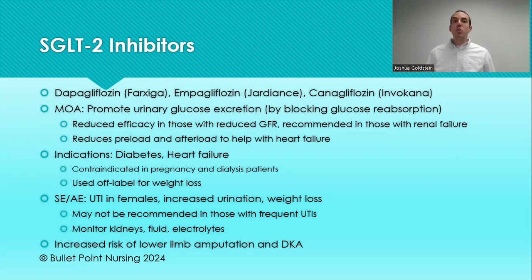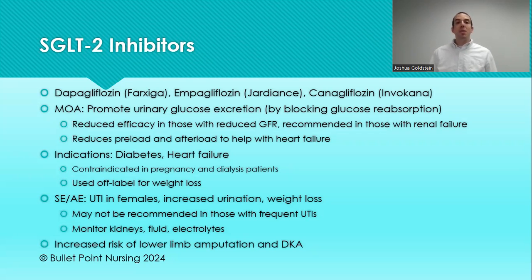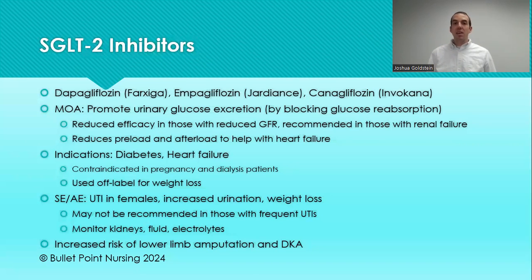SGLT2 inhibitors are also in the actual guidelines for treatment of heart failure — they are one of the four drug classes given for heart failure alongside beta blockers and ARBs. When prescribing for heart failure, educate the patient that the mechanism differs from its use in diabetes. These are contraindicated in pregnancy and in dialysis patients. They also cause weight loss through a different mechanism of action, making them a viable option alongside GLP-1 agonists for patients struggling with weight who are maxed on metformin and not at goal.